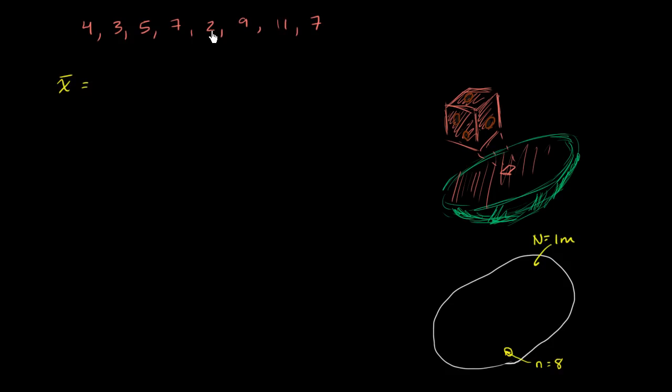19 plus two is 21, plus nine is 30, plus 11 is 41, plus seven is 48. So I'm going to get 48 over eight data points. So this worked out quite well. 48 divided by eight is equal to six. So our sample mean is six. It's our estimate of what the population mean might be.